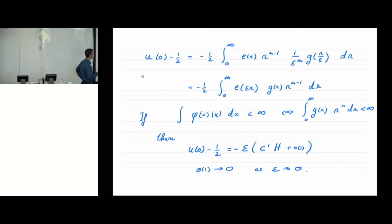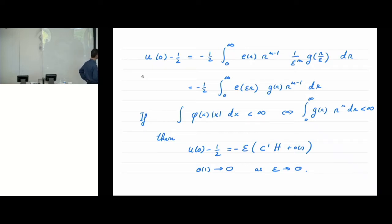One way of doing it: change coordinates, denoting the new coordinate R times epsilon. Then the integral on top is simply the same as the integral on the bottom. This is how much U of zero differs from one-half. If I sit on the boundary of the set E, this would be the value of U of zero minus one-half. Now, how large is this integral? It depends very much on the decay properties of the function g at infinity.